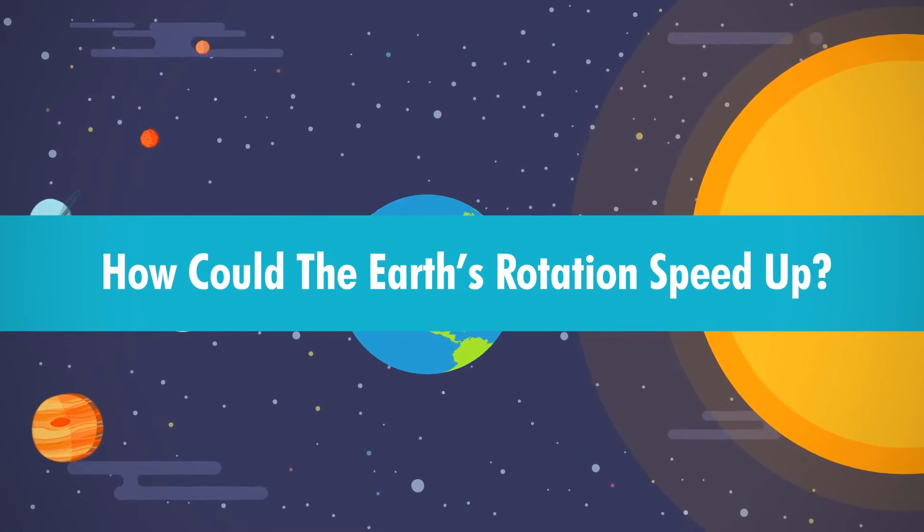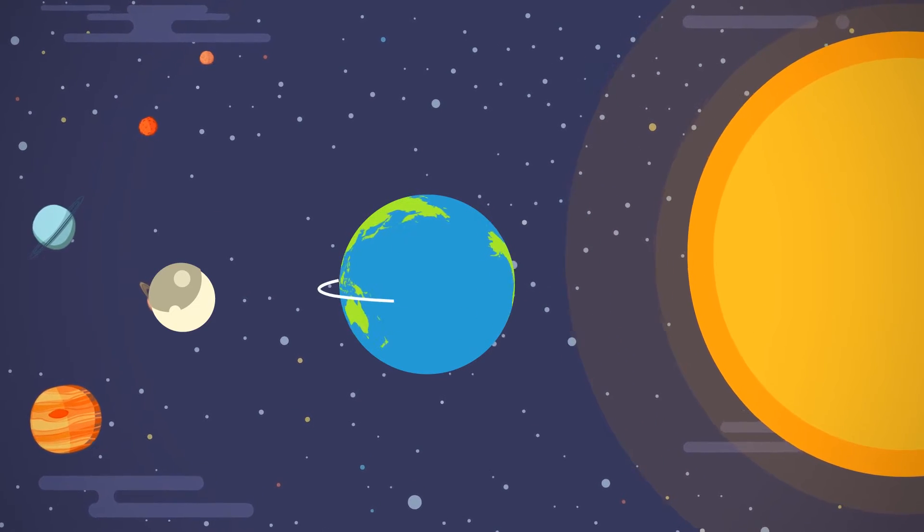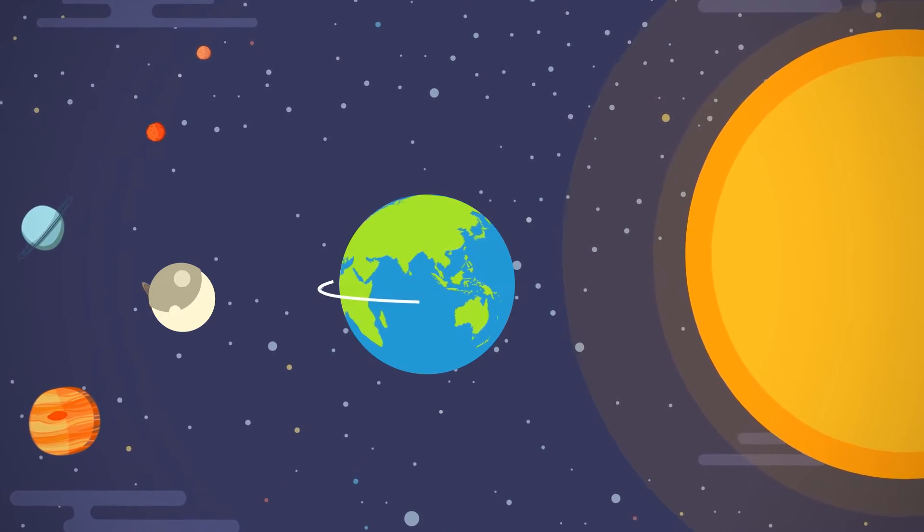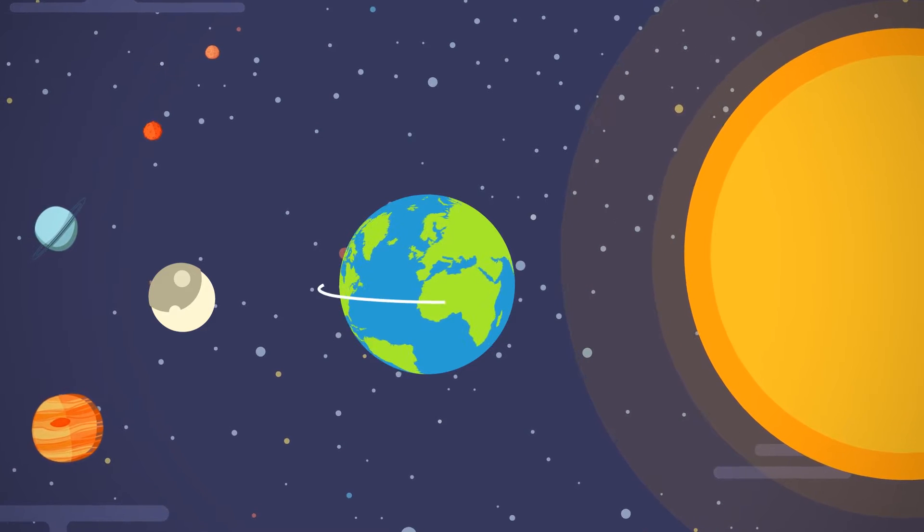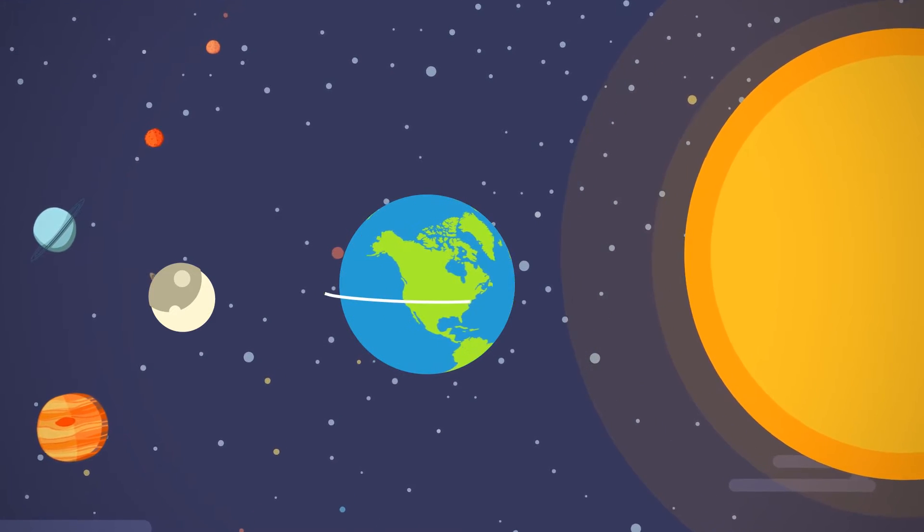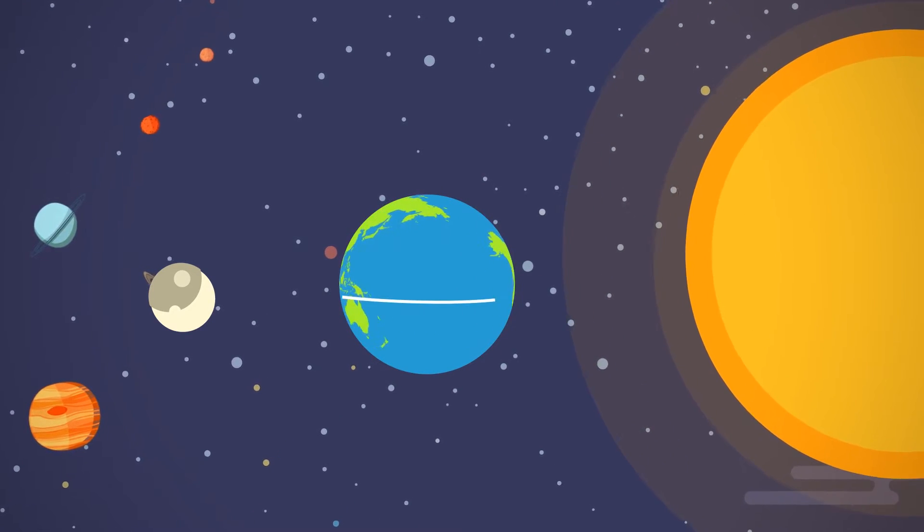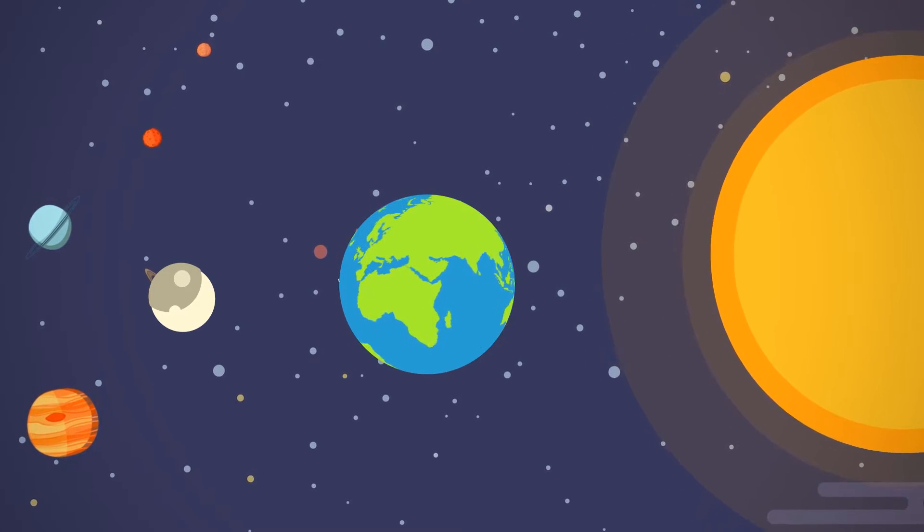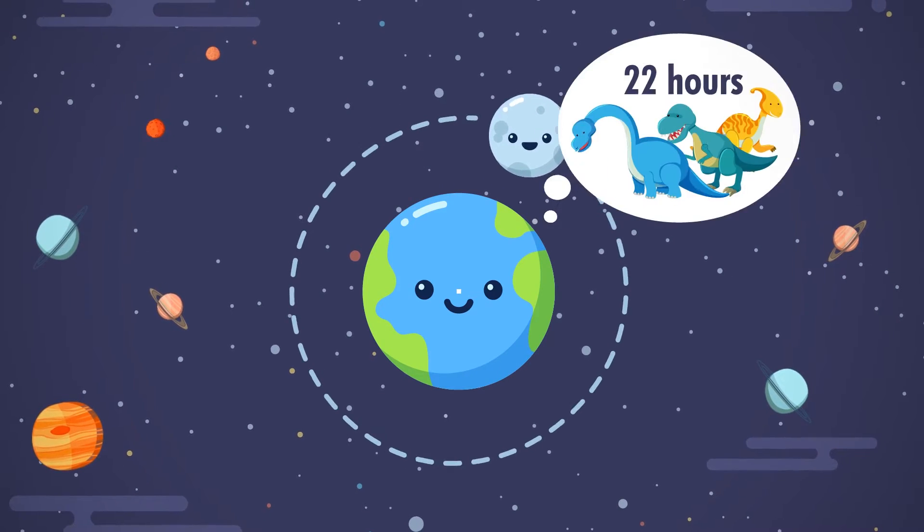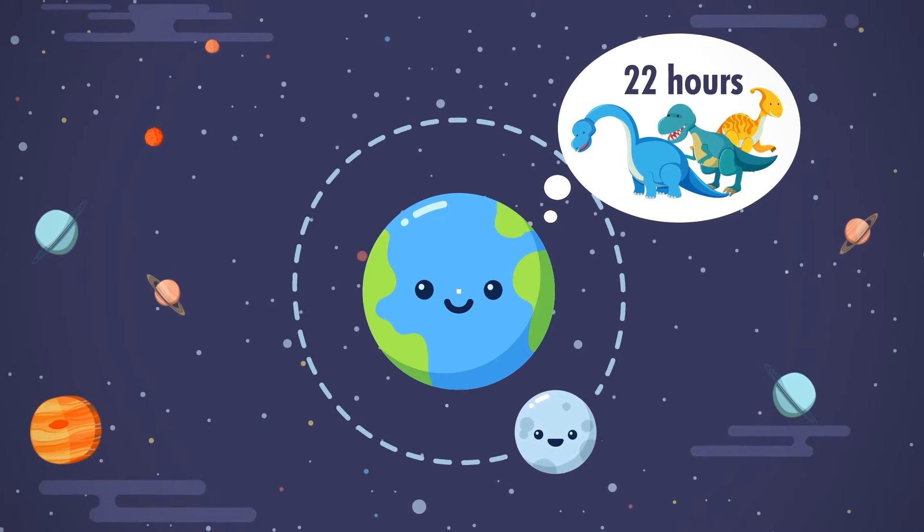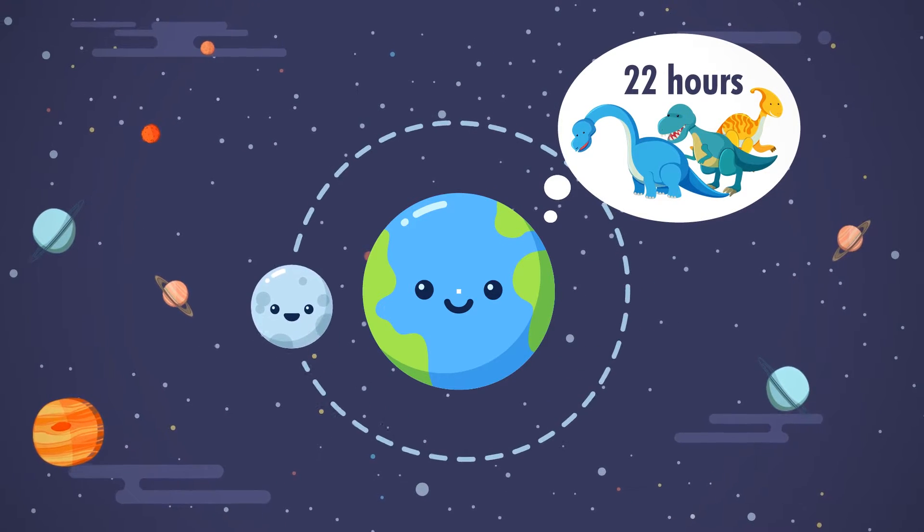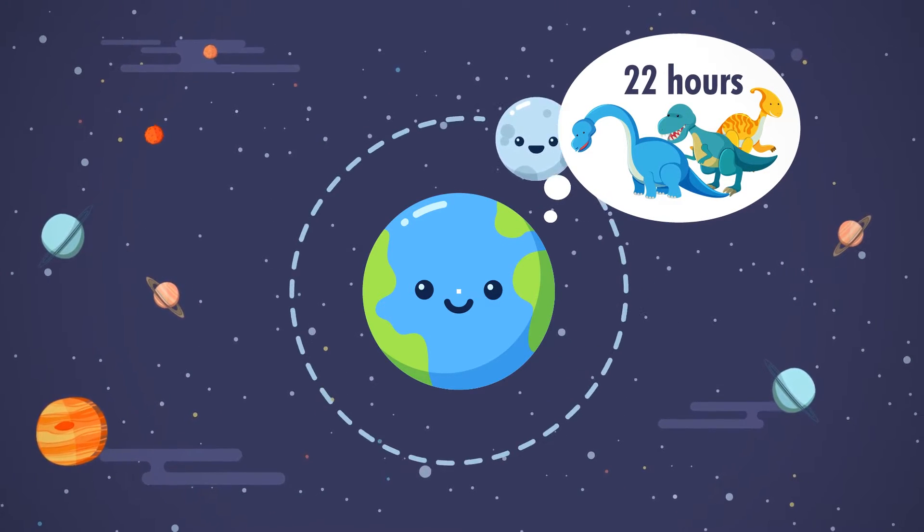So how could the Earth's rotation speed up? Currently, the rotation of the Earth is slowing down ever so slightly each year. At this rate, in one century, a day will last 2 milliseconds longer than it did today. This slowdown has taken place ever since the moon's gravitational pull took hold and means that during the time of the dinosaurs, a day would have only lasted for 22 hours. But there are a few ways that the Earth's rotation could speed up.